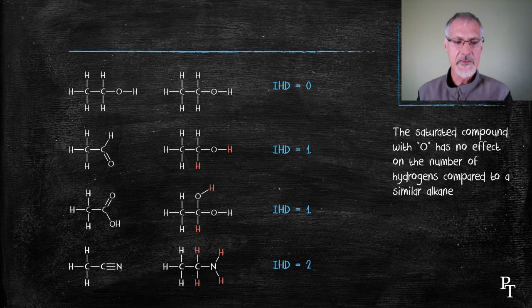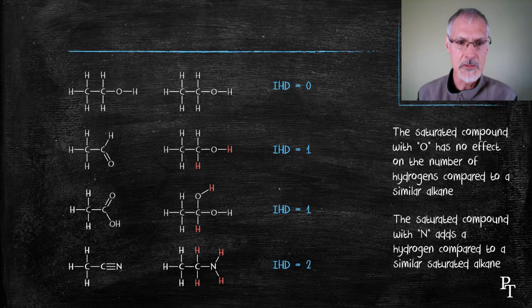Just a note here that the presence of nitrogen has essentially added one hydrogen to our molecule. What I mean by that is if you look at ethane, the corresponding saturated hydrocarbon, it has six. This compound has seven.